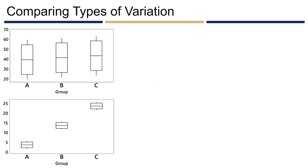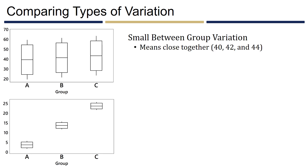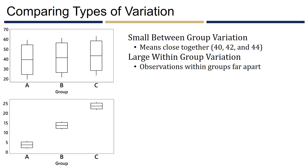Looking at the top set of side-by-side box plots: these exhibit small between-group variation because the means of groups A, B, and C are close together (approximately 40, 42, and 44). They also exhibit large within-group variation, with a range of about 40 in each group. Small between-group variation combined with large within-group variation suggests the means are not that different, and we probably wouldn't find a significant difference.